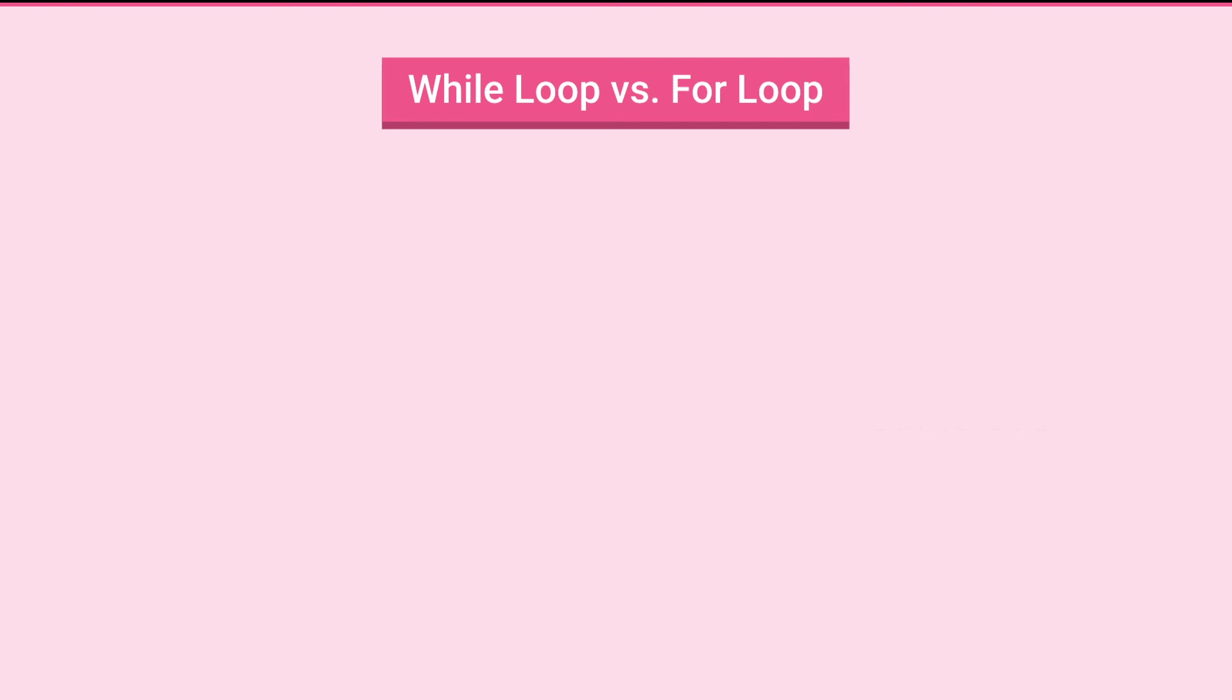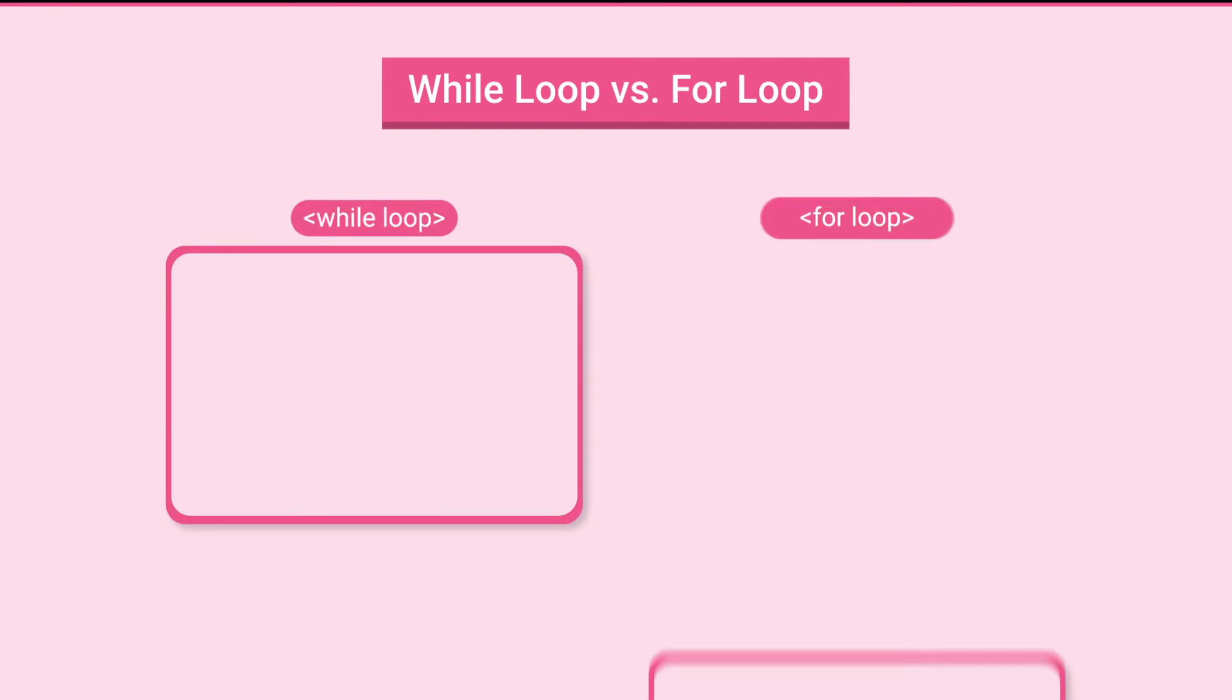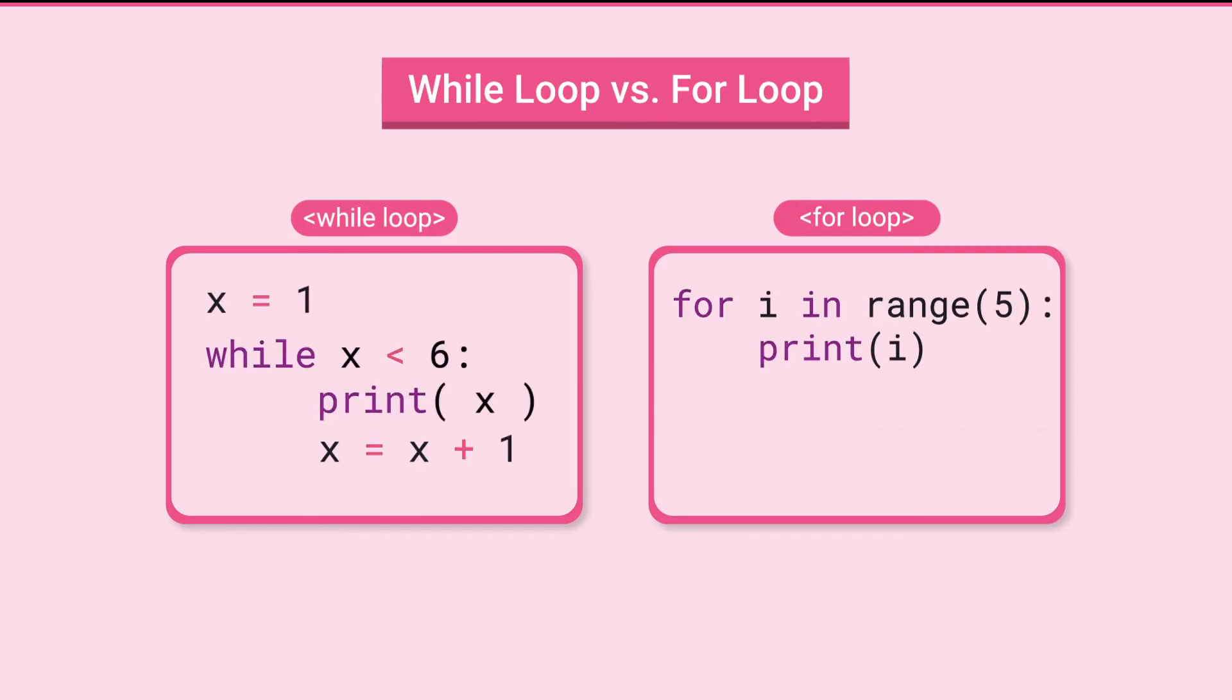While loop versus for loop. You may have found that using while loop seems more complicated than a for loop. Here are the code segments that output numbers from 1 to 5. The code on the left uses the while loop and the code on the right uses the for loop. As you can see, the for loop looks so much easier to use. So are there situations where while loops are preferred?